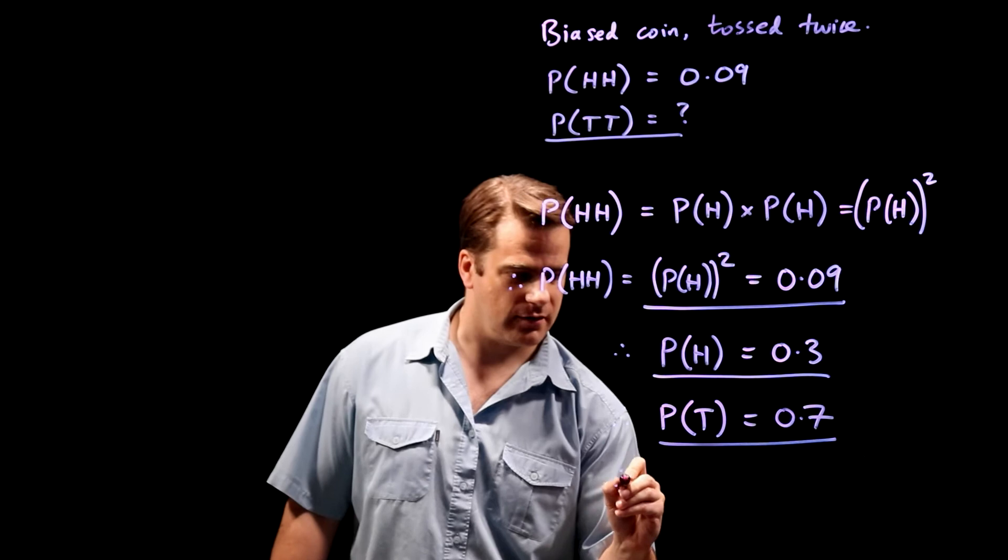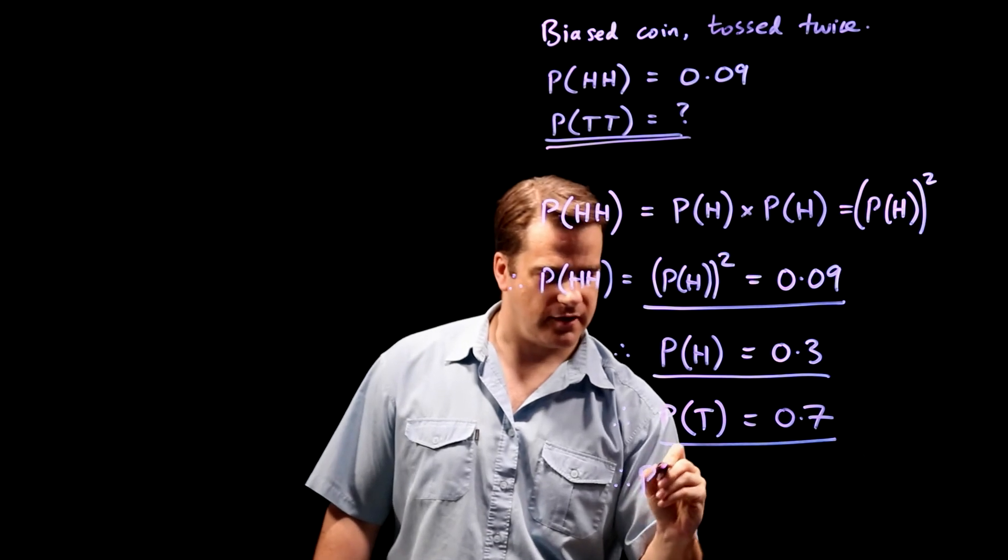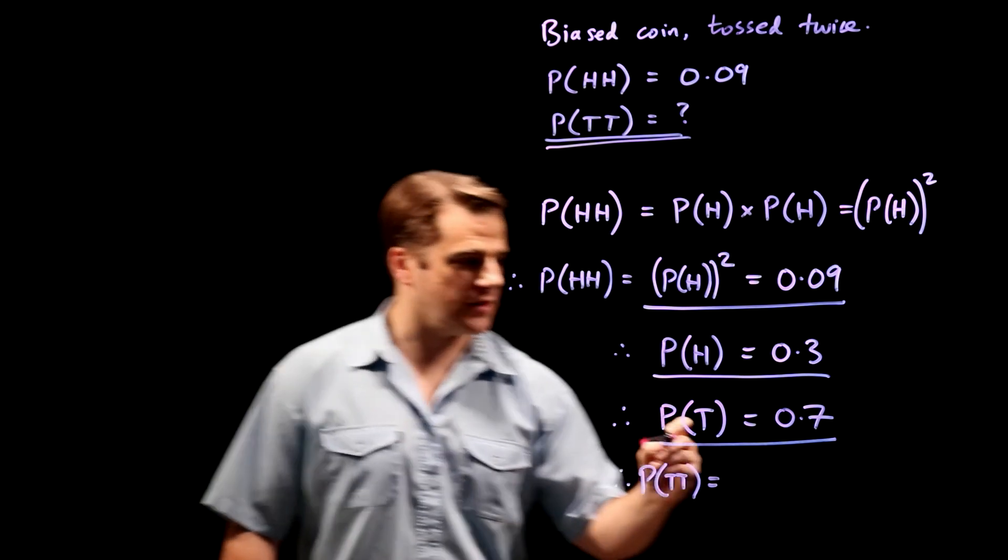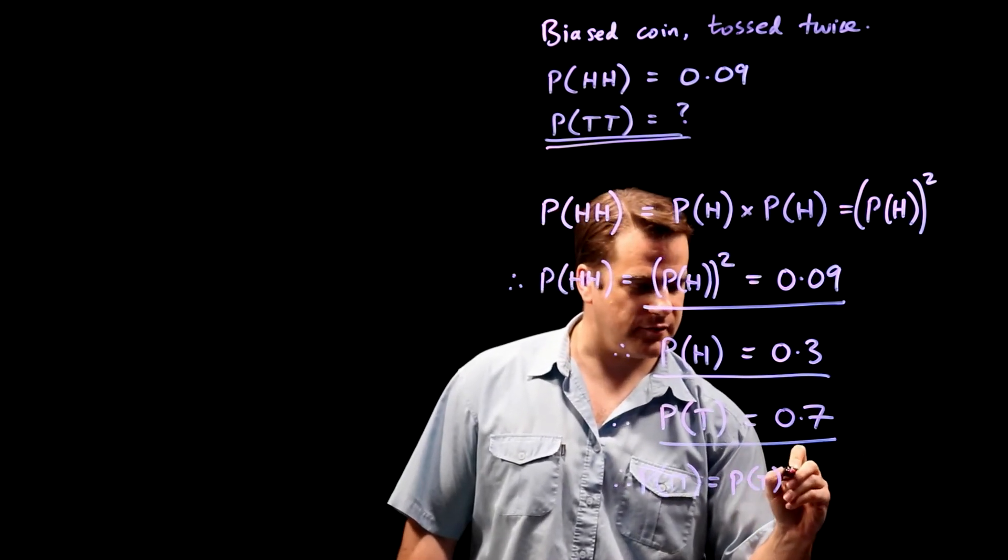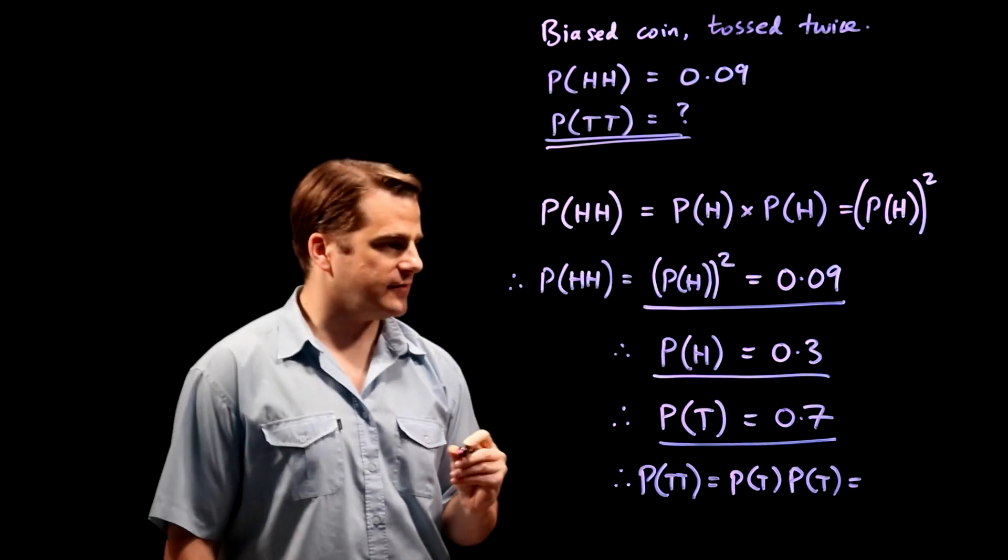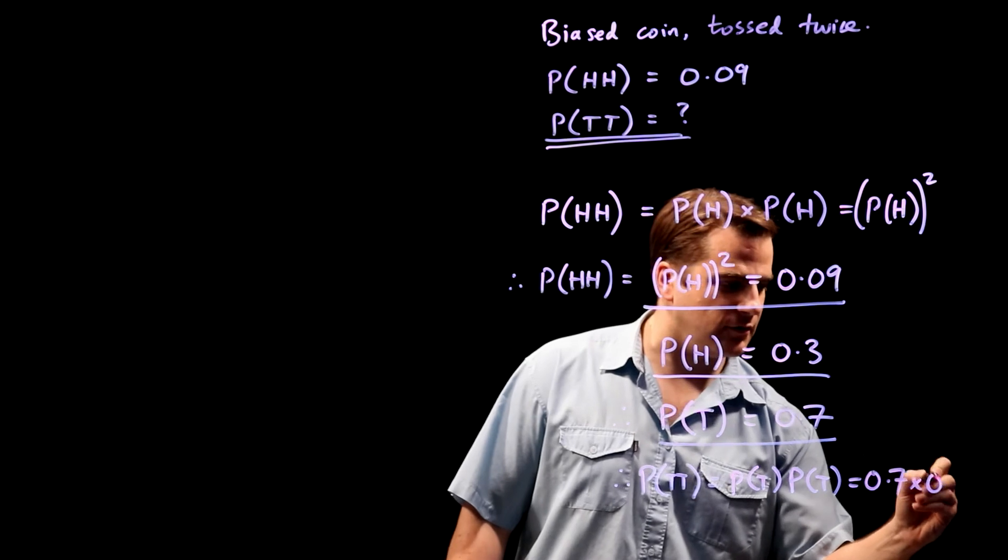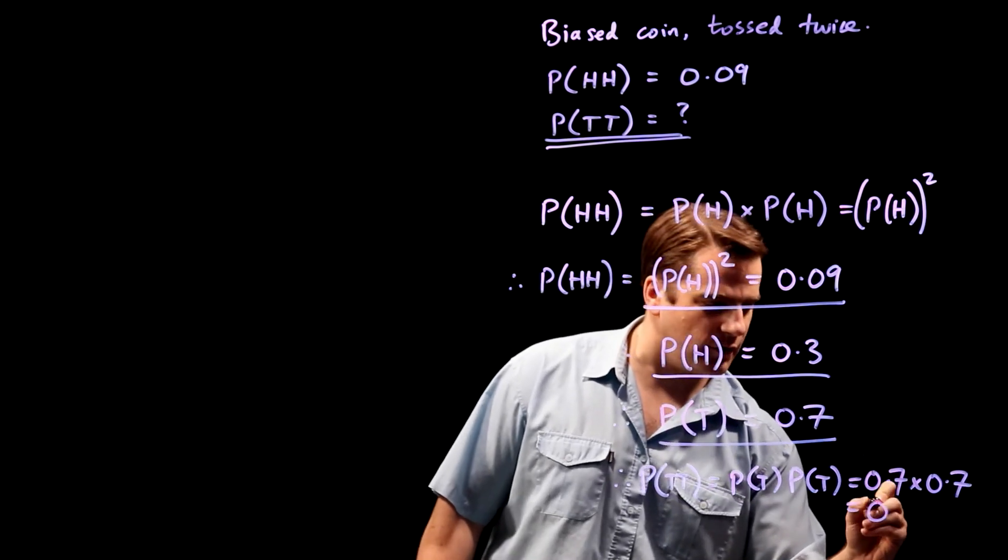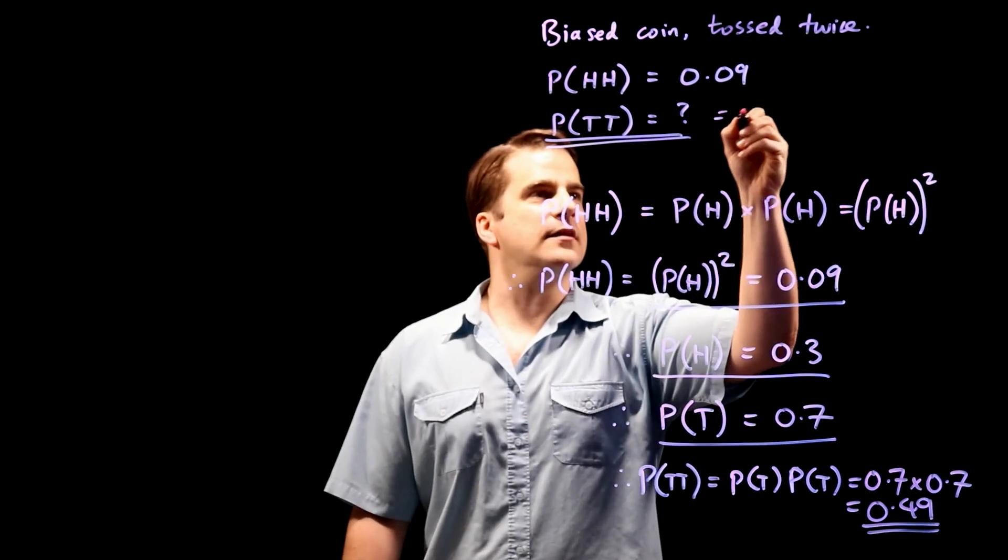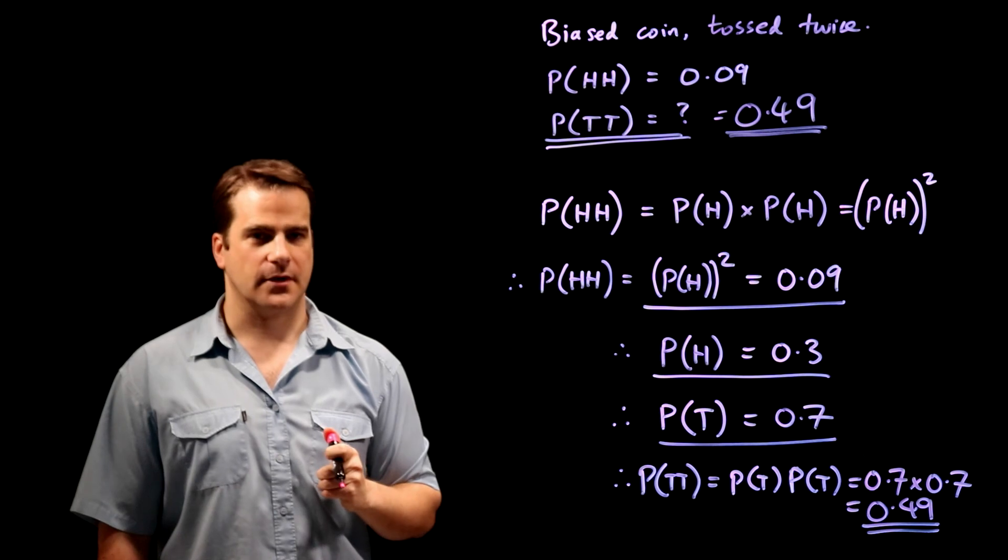And therefore, the probability of getting two tails, again, they're unrelated, so it's just the probability of getting a tail with the first flip times the probability of getting a tail with a second flip, which is 0.7 times 0.7, which is 0.49. And that's the answer. It's 0.49.